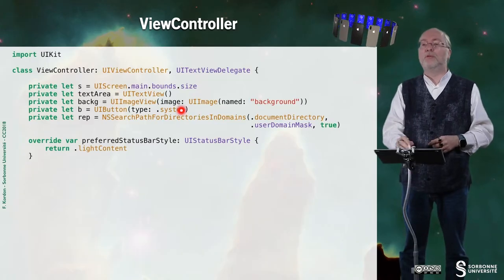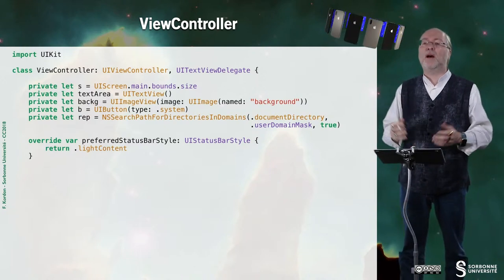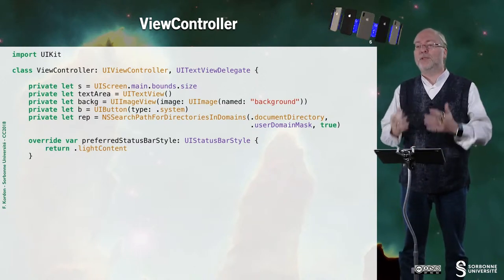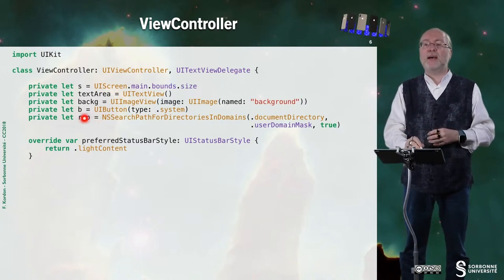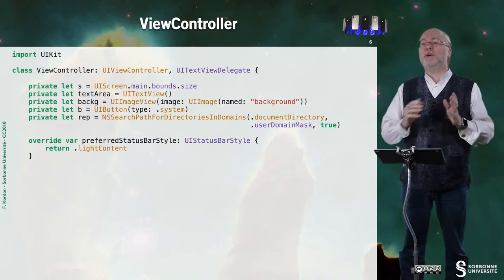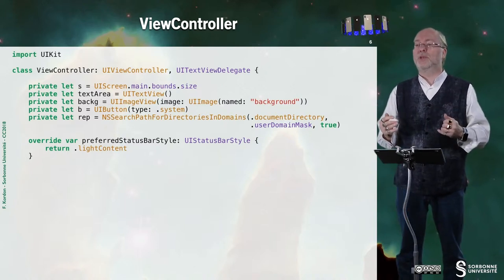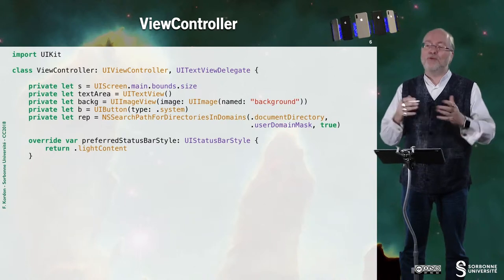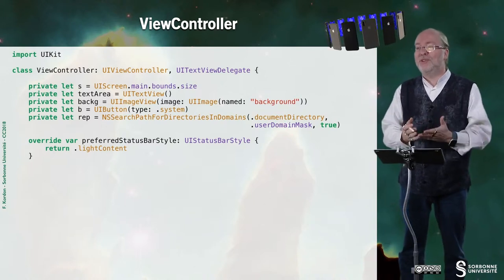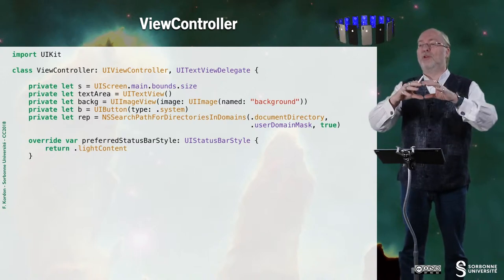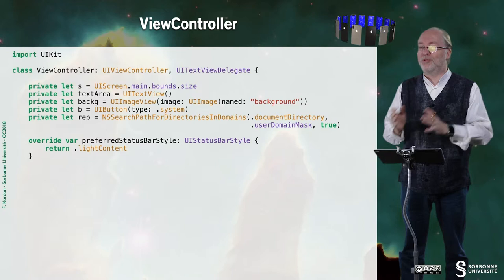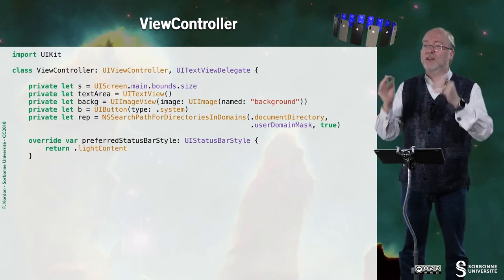Let's have a look at the ViewController. Here you have some variables — typically a textarea and a button. You also have this rep variable which is a reference to the home directory of the application, and more precisely the document directory. I told you in a previous video that the home directory of the application was structured, and here I request a reference to the document directory, which is where all temporary or non-temporary data from the application should be stored.